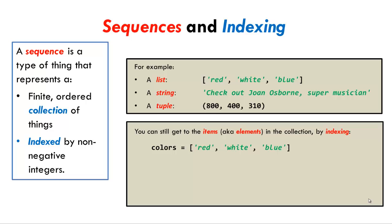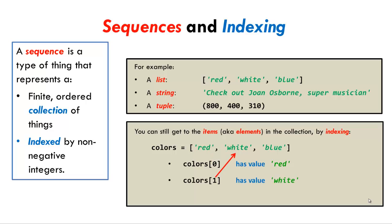The key to sequences is that a single name — colors in this example — refers to the entire collection. But you can still get to the elements, or items, in the collection by indexing. That means you say the name of the sequence, colors in this example, an open bracket, a number that is the index of the item — zero in this first example — and then a close bracket. So here, colors one refers to white, and colors two to blue.